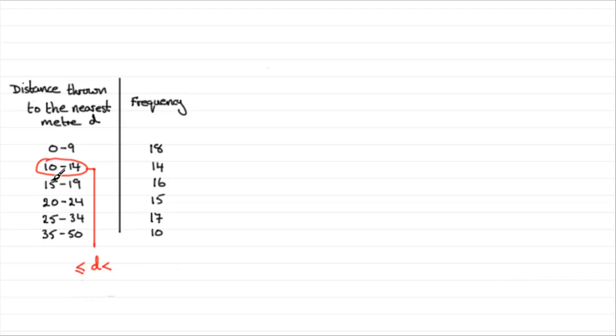Now what is the lower bound for this? Well, because we're measuring to the nearest meter, the lower bound must be 9.5 meters. And the upper bound, we're going from 14 to 15, so it must be just less than 14.5 meters. That means that the class width isn't from 10 to 14, just 4 units. It's actually 9.5 to 14.5. So the class width is going to be 5 units, the difference between those two values.